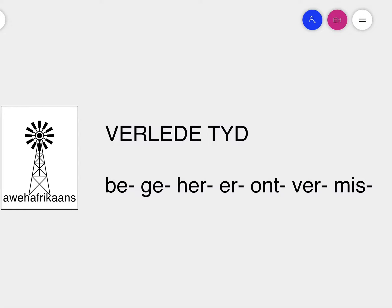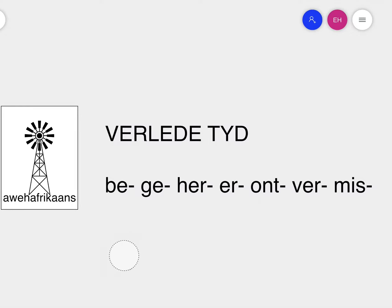Sometimes I get kids who say the past tense of 'bel' and try to apply this rule. But remember, in the word 'bel', 'b' is not a prefix because 'l' is not a word on its own. So in the case of 'bel', the past tense is 'het gebel'. The rule only applies when you are dealing with a prefix.